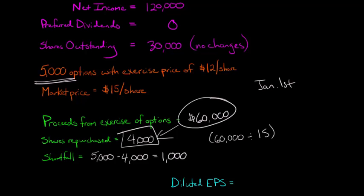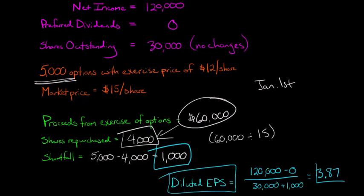We're going to add 1,000 to the denominator. I'll quickly run through what our diluted earnings per share will be, and then I'll show you an even faster way to do this. We'll have $120,000 in the numerator. We subtract out zero because there are no preferred dividends. We have the 30,000 shares outstanding, and then we're going to add 1,000. That 1,000 is just that shortfall. The shortfall is added to the denominator. When we compute this out, it's going to give us $3.87 a share, which would be our diluted earnings per share.